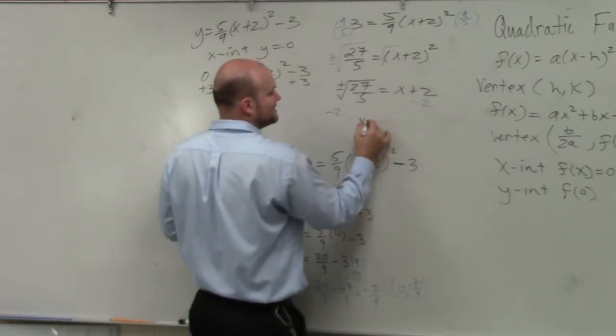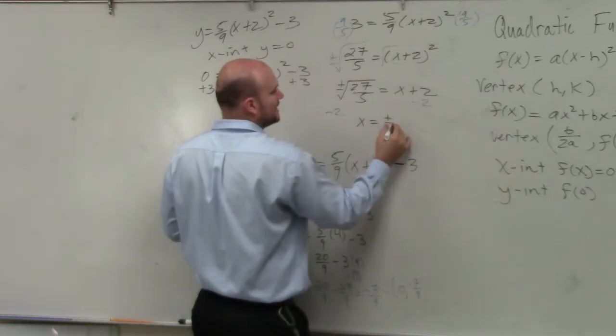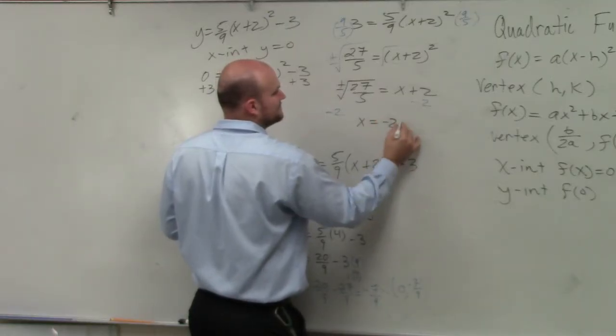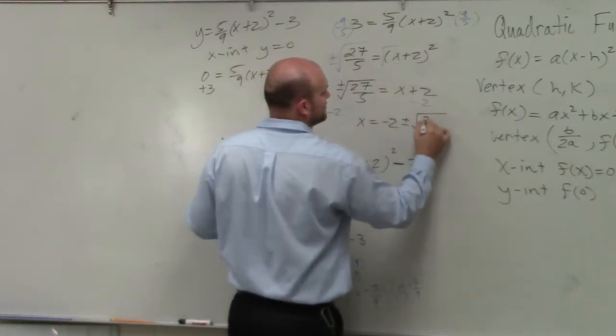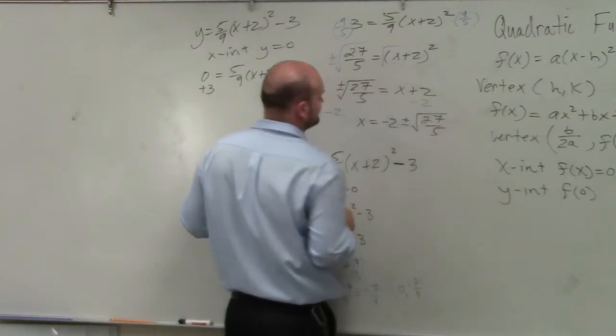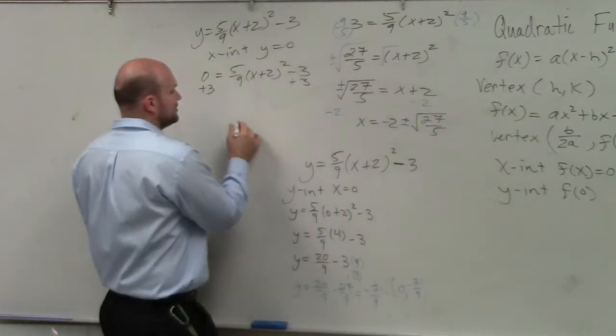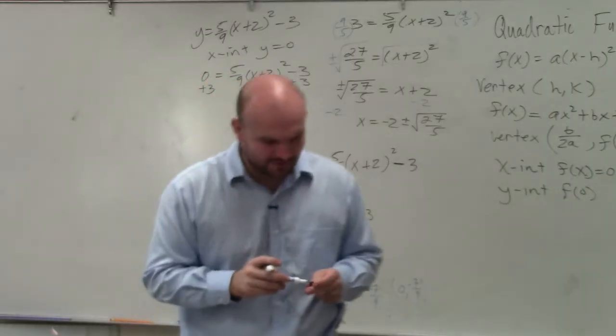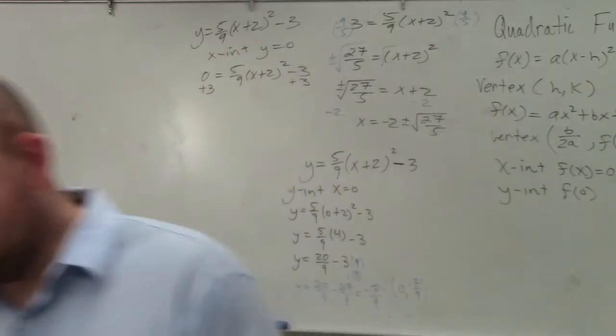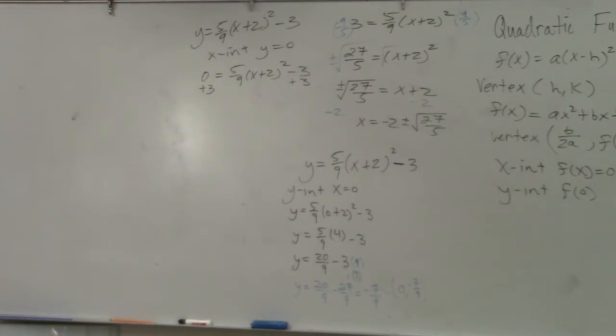So the x-intercepts are x equals plus or minus, let's do negative 2, plus or minus the square root of 27 over 5. So you could write, now again, I'm just kind of going to, I just want to go over the process with you guys. You could write those as coordinate points as well.